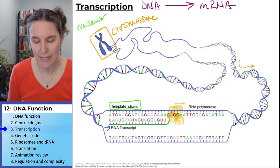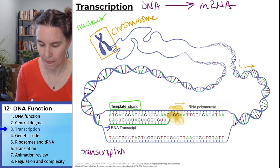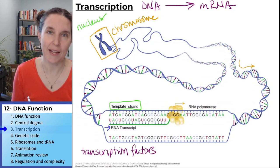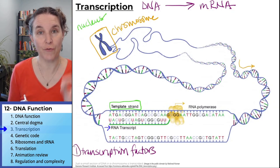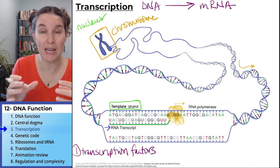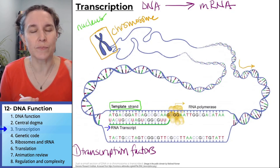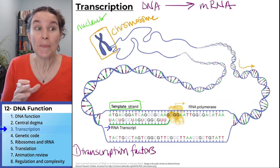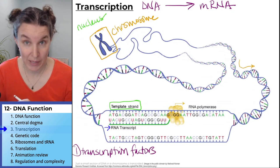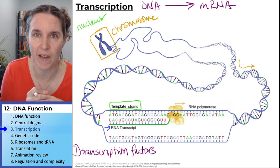The first thing that happens is we have transcription factors. Transcription factors first bind to the DNA and open it up. In DNA replication, we named a bunch of enzymes that do the work, but in transcription they just call all those things transcription factors.